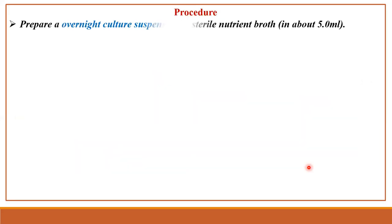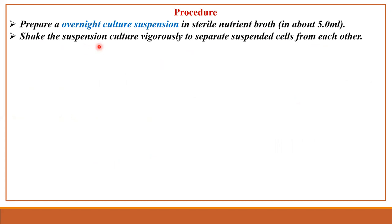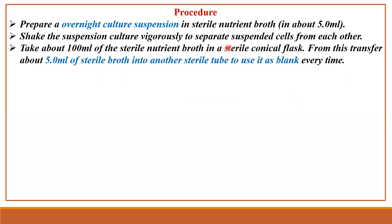Procedure: prepare an overnight culture suspension in sterile nutrient broth of 5 ml. Take the suspension culture vigorously to separate the suspended cells from each other. Take about 100 ml of sterile nutrient broth into a sterile conical flask. From this, transfer about 5 ml of the sterile broth into another sterile test tube, which we are going to use as a blank every time.